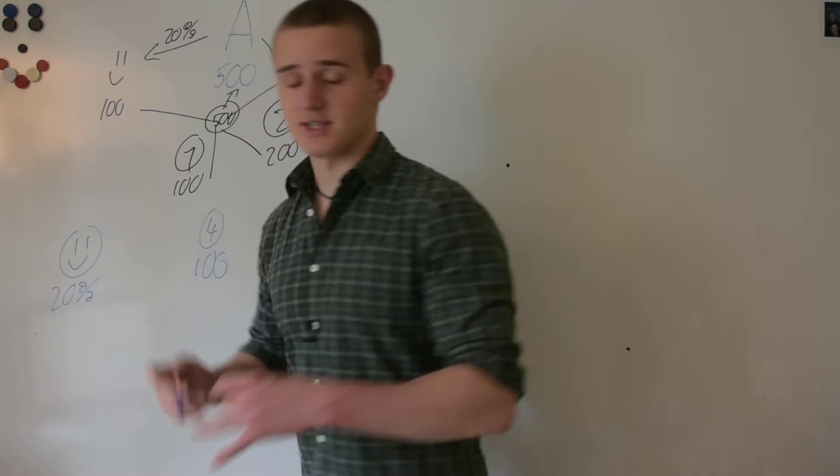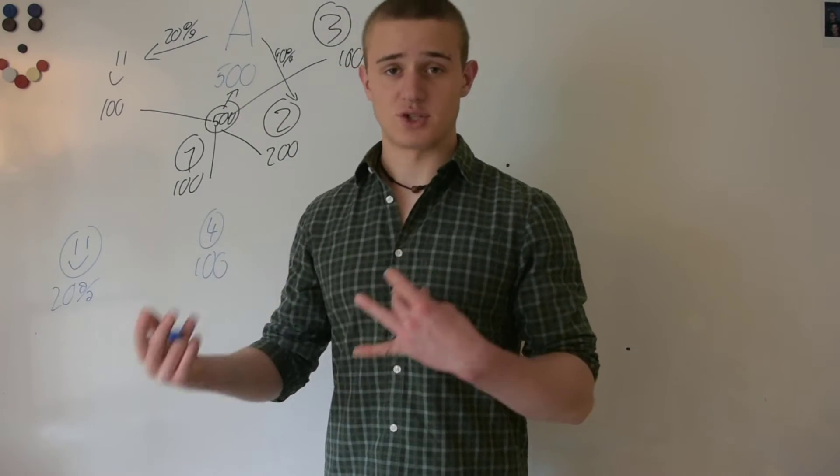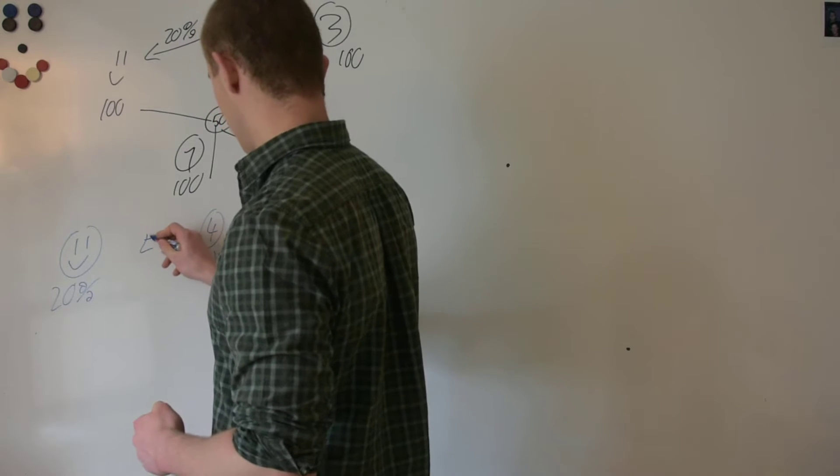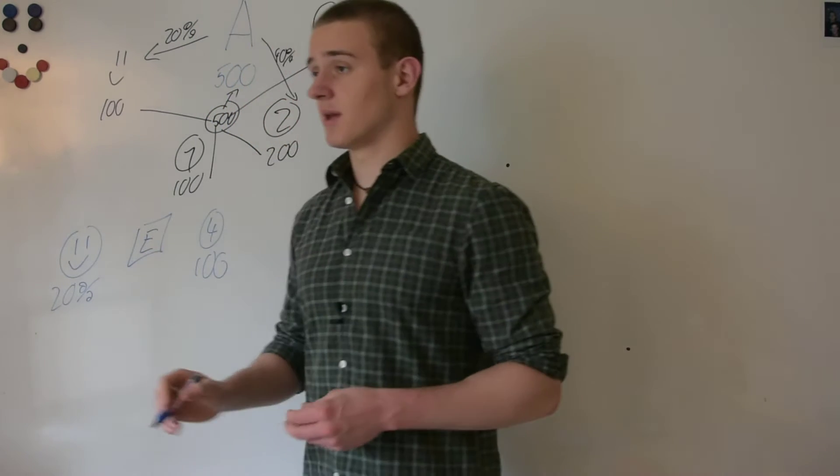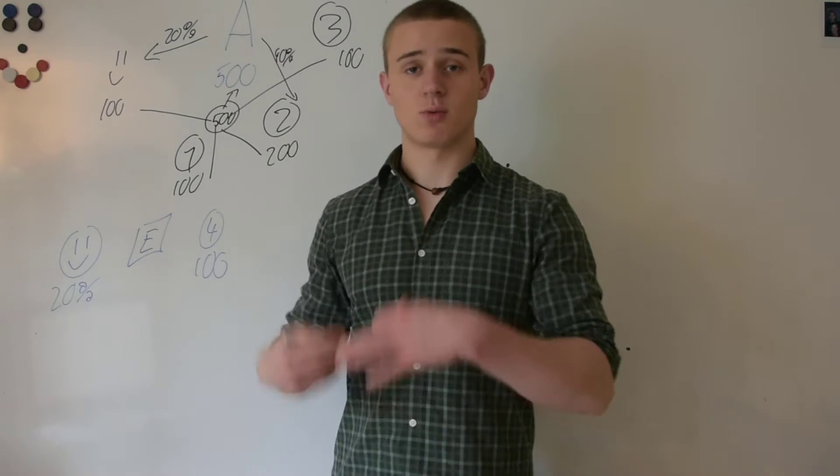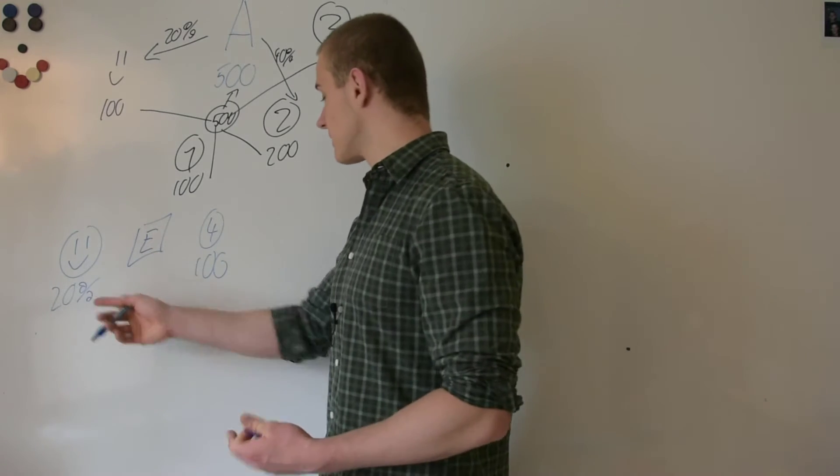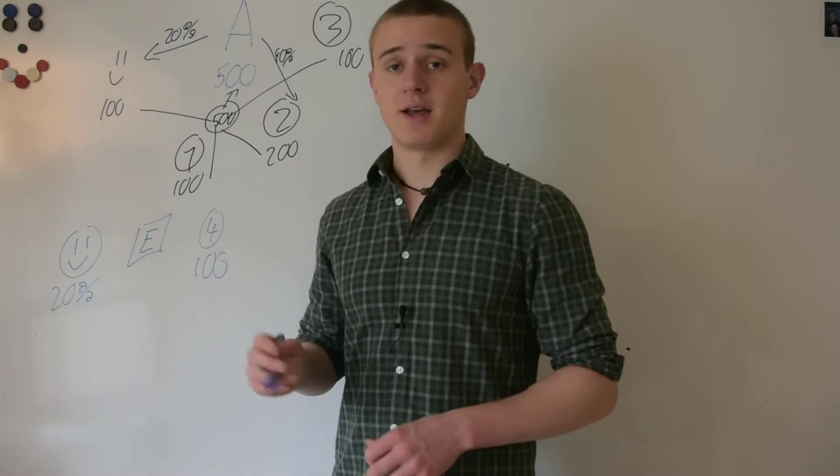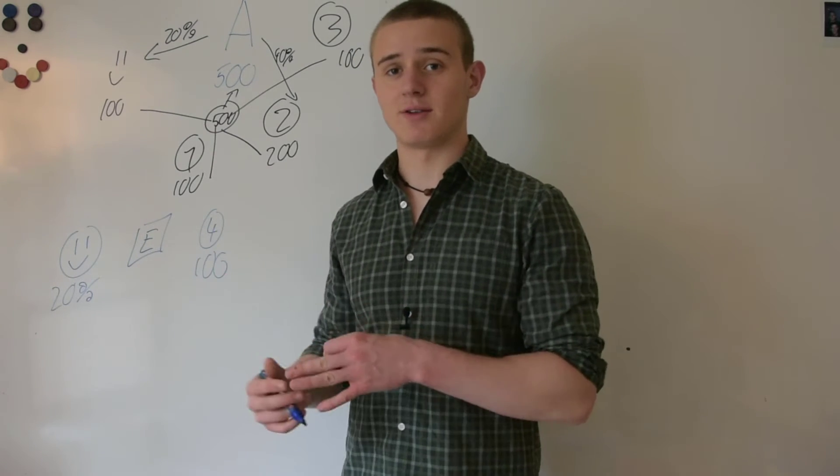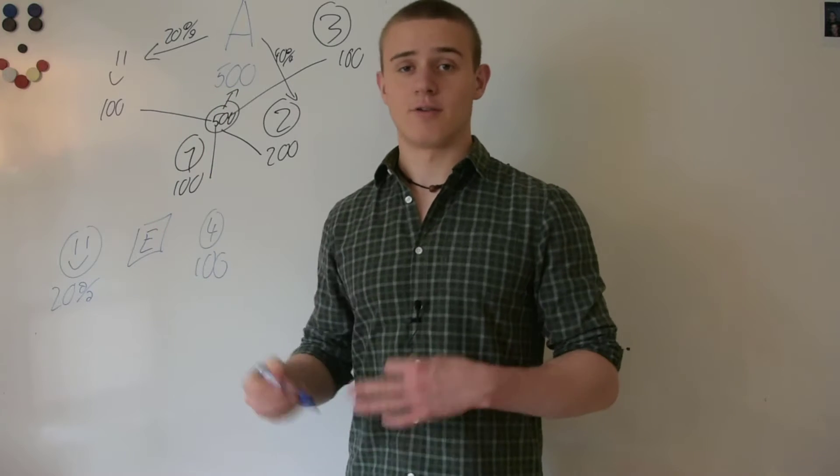Now those transactions usually go through an exchange. So we'll have E for exchange. And then what happens is you make an offer. You say I want 100 for my 20%. And then comes a person, number four in that case, and makes a bid and says I'm ready to buy 20% of asset A for 100.